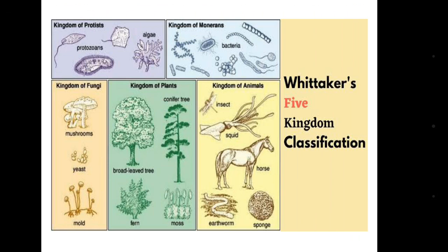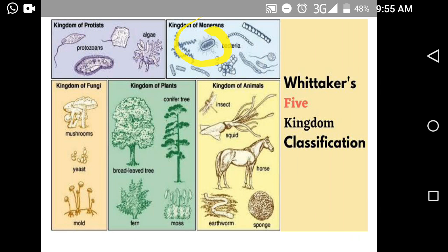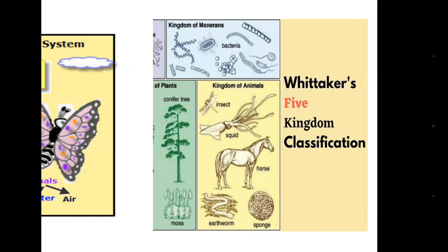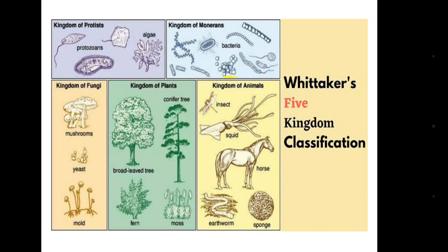In Whittaker's five kingdom classification, we have five kingdoms. The first is Kingdom Monera, second is Kingdom Protista, third is Kingdom Fungi, fourth is Kingdom Plantae, and fifth is Kingdom Animalia.